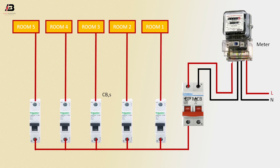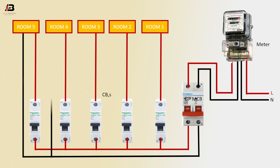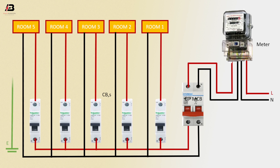Phase connection output from all circuit breakers to all rooms. Neutral connection to room 1, 2, 3, 4 and room 5. Earth connection to room 1, 2, 3, 4 and room 5. All earth points connected.